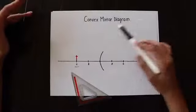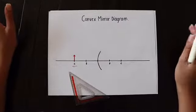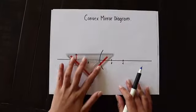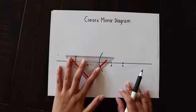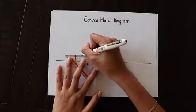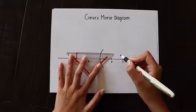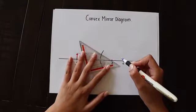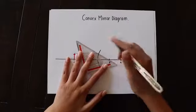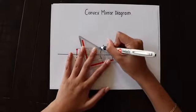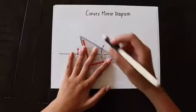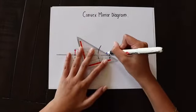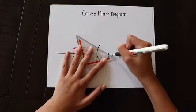Next we'll be doing a convex mirror diagram. This one differs slightly from the concave one. Beginning with the first ray, it is going to travel parallel to the axis. Once it hits the mirror, it's going to reflect back from the focal point. You want to position your ruler crossing through the focal point, but the real ray will go this way. You have to draw a dotted line back through the focal point because that shows the direction in which it was going.